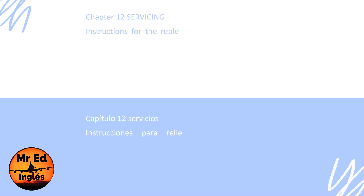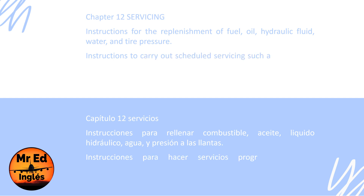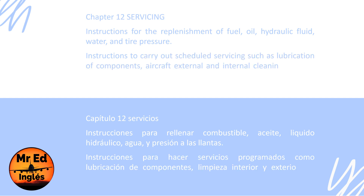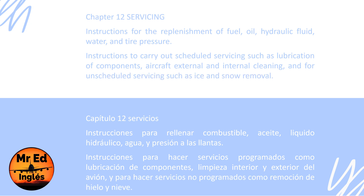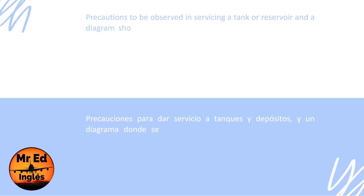Chapter 12: Servicing. Instructions for the replenishment of fuel, oil, hydraulic fluid, water, and tire pressure. Instructions to carry out scheduled servicing such as lubrication of components, aircraft external and internal cleaning, and for unscheduled servicing such as ice and snow removal. Precautions to be observed in servicing a tank or a servo, and a diagram showing location of regular and emergency servicing points.